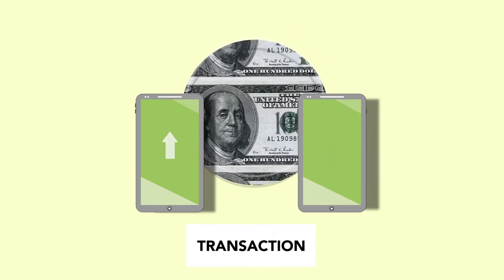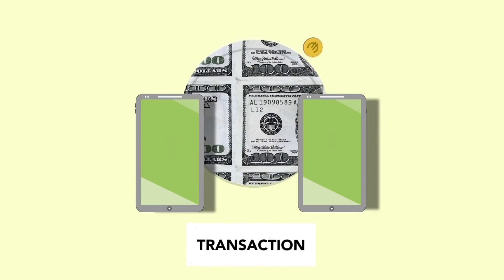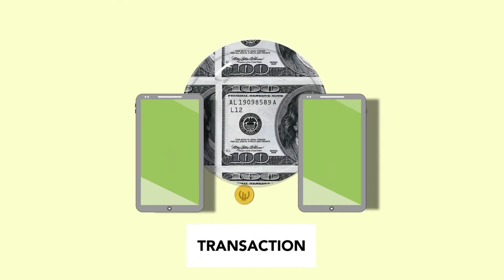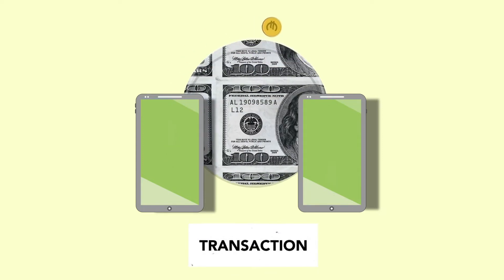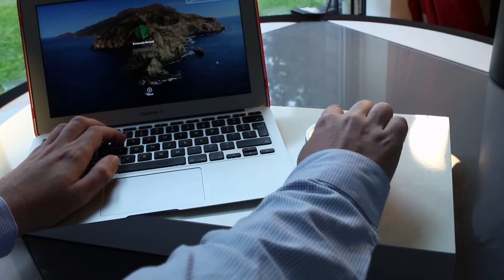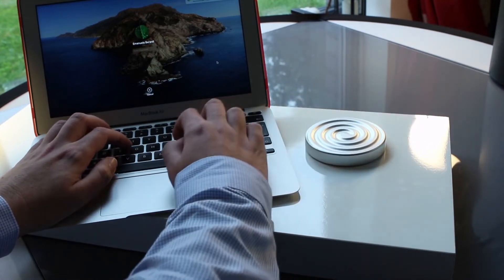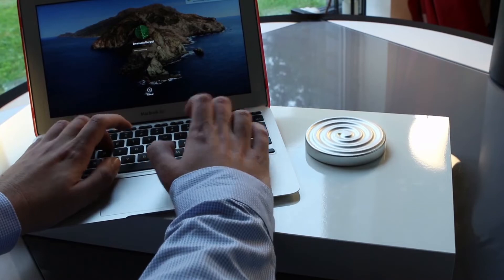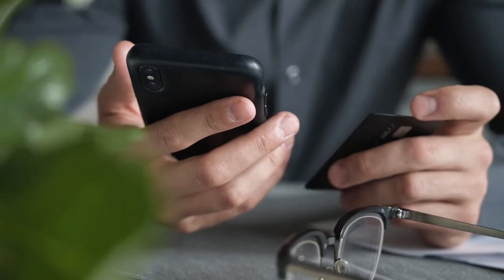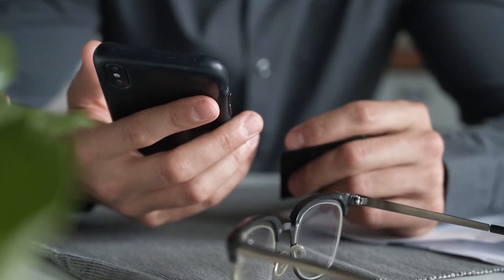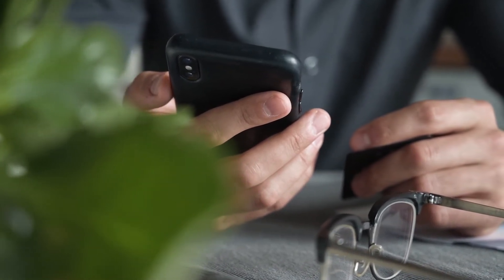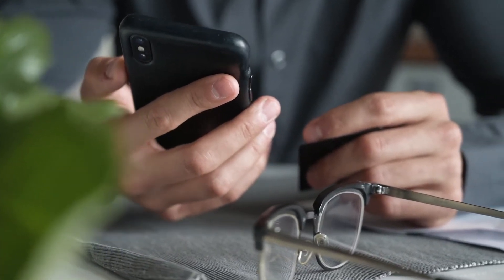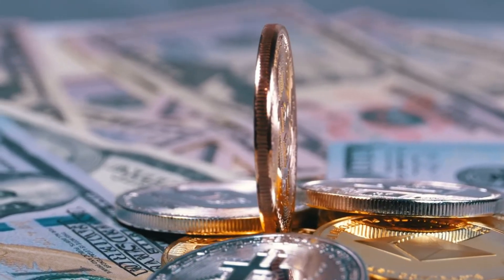To complete a transaction, you need access to a password known as a private key, which is much like a bank account. You can own multiple keys and own all the funds sent to those keys. Transactions are recorded in a public ledger, which shows the transaction totals without revealing the identities of the parties involved.